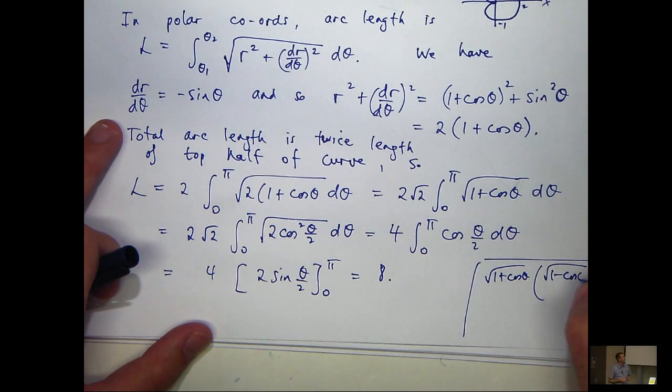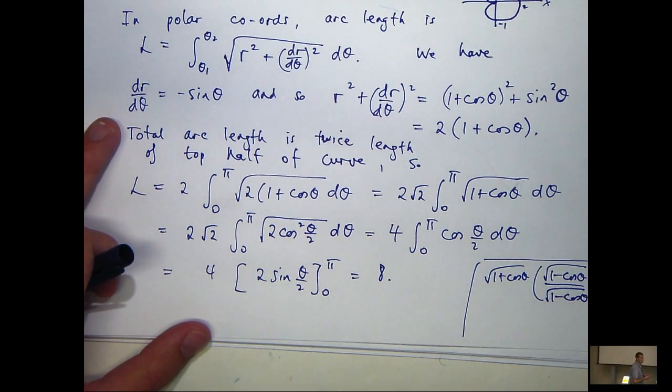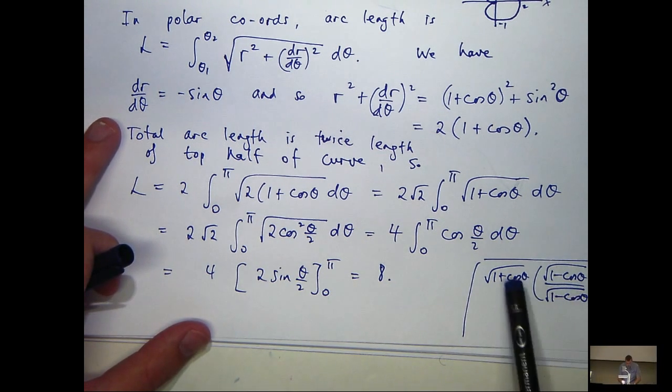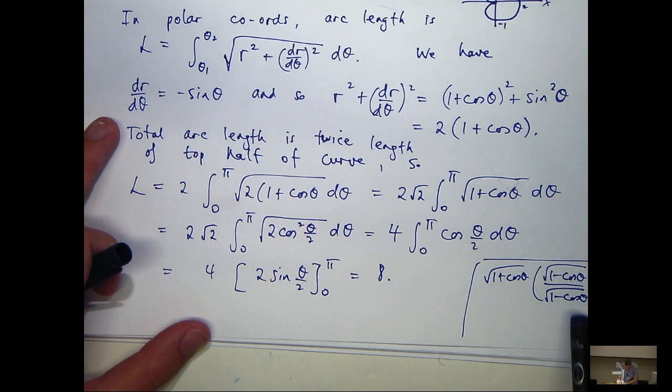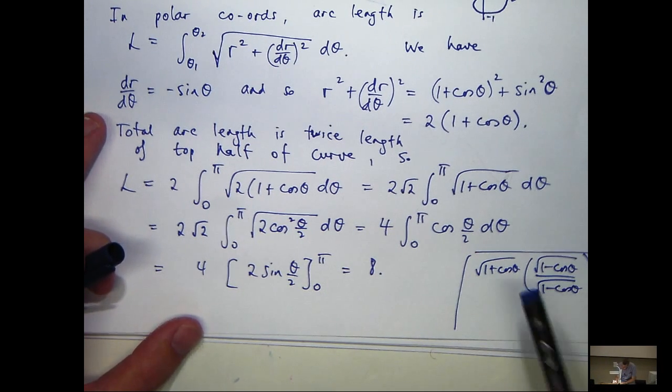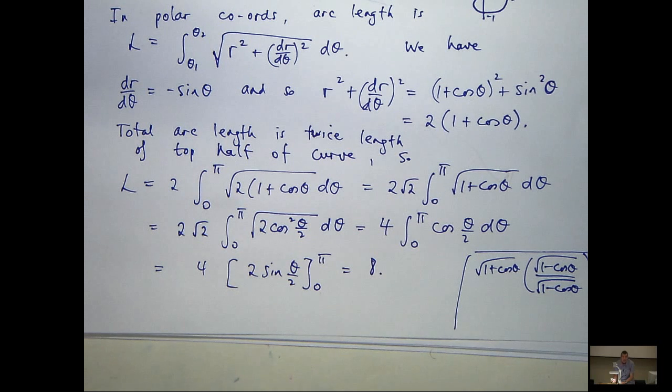You're going to get sine, root sine squared up the top, you're going to get root one minus cos θ down the bottom, and you can just solve that by either inspection or substitution. That's another way of doing it.